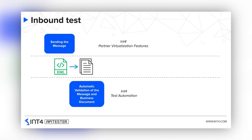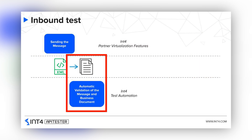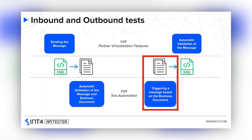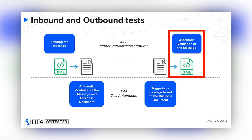First, let me give you some hints on the inbound and outbound tests in int4suite. This is how the inbound test looks like. int4suite virtualization mechanics prepares and sends the message to the system under test, pretending to be the external partner. Then the results of processing this message are captured and validated against rules and reference data. For outbound testing, we are going to request the system under test to generate the message and then validate the outcomes of its processing.